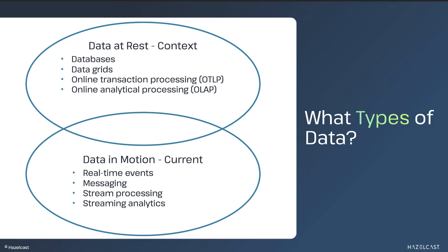Data in motion, by contrast, is data that you want to act upon immediately. It's taking real-time event data and responding right away, whether it's reacting to shifts in the stock market, providing a customer with suggested purchases based on their current shopping cart, or automatically adjusting a manufacturing process based on real-time sensor data.